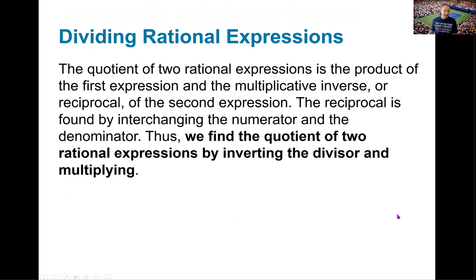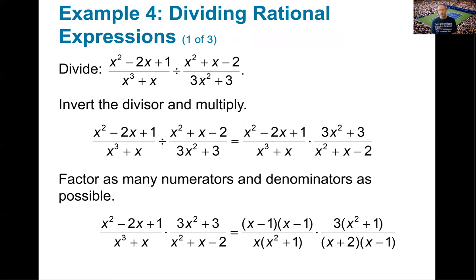Many of the same ideas apply when we divide rational expressions. The only difference is that whenever you divide by a rational expression, you multiply by the reciprocal of the second term — we find the quotient by inverting the divisor and multiplying. For example: x squared minus 2x plus 1 over x cubed plus x, divided by x squared plus x minus 2 over 3x squared plus 3. Leave the first fraction alone and multiply by the reciprocal of the second, then factor everything just like in the last problem.